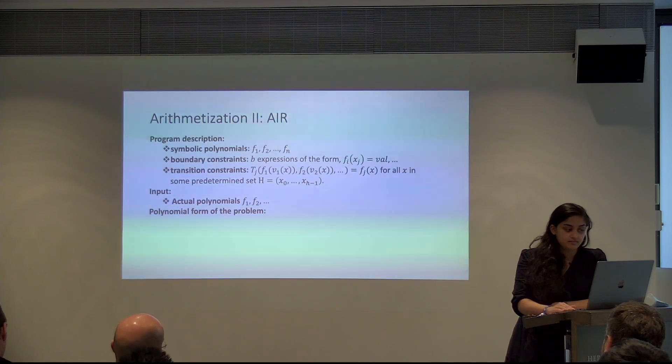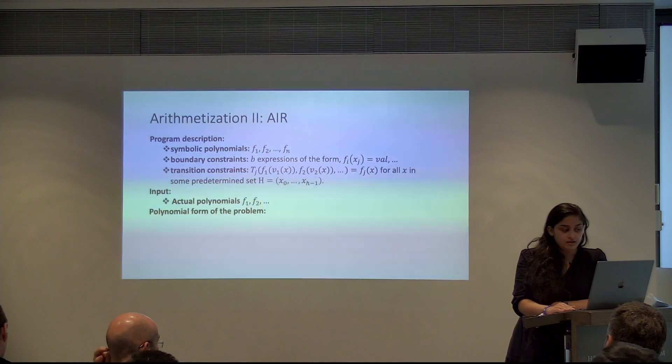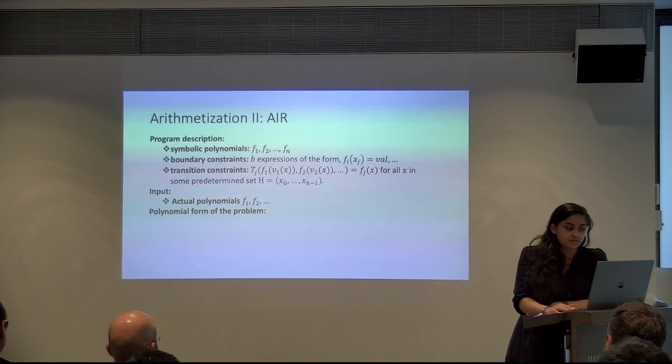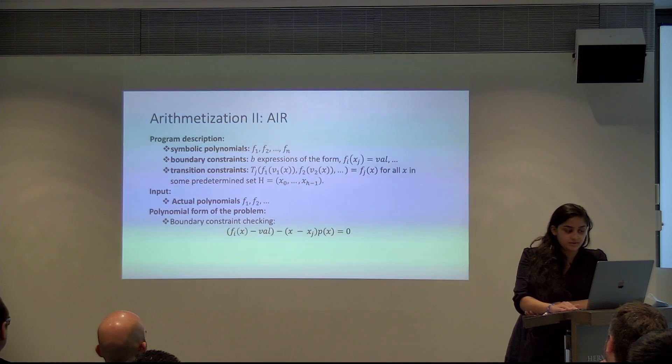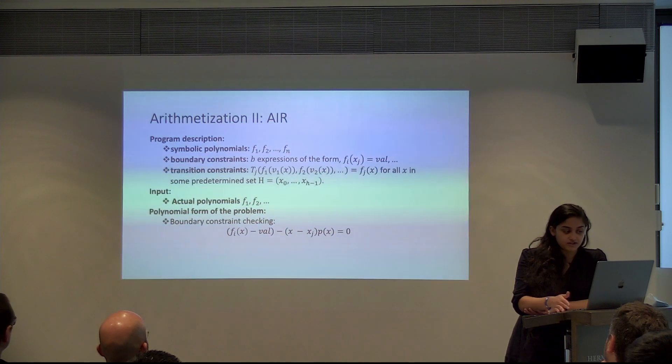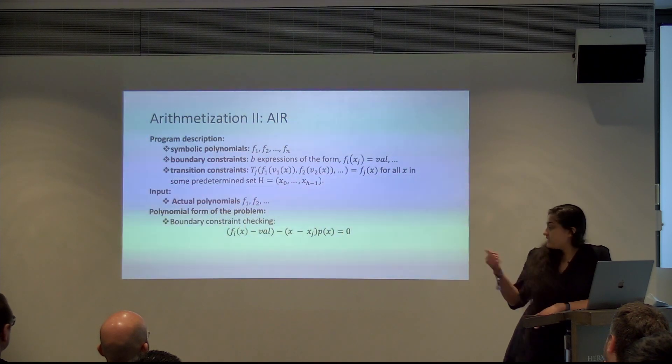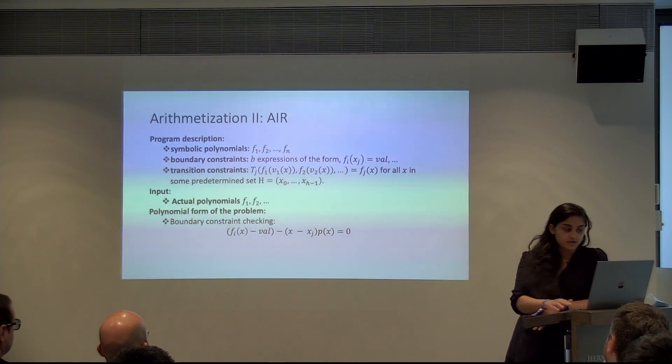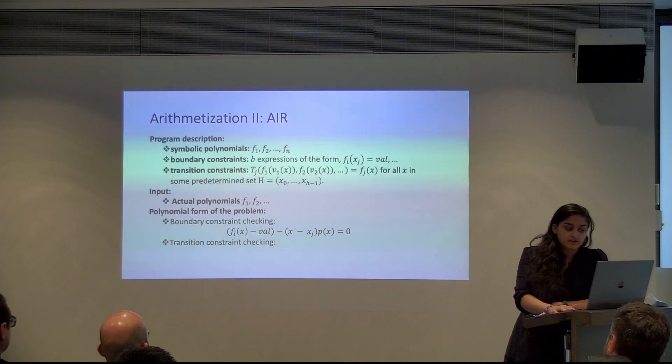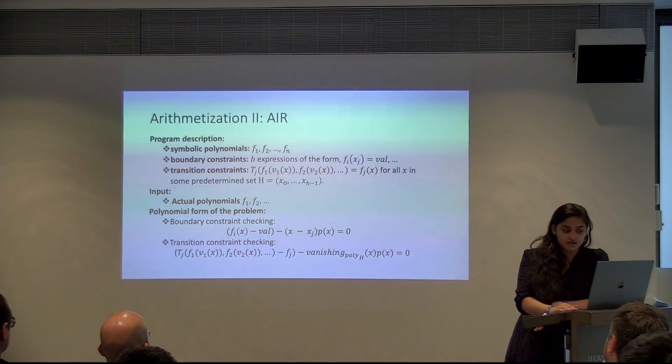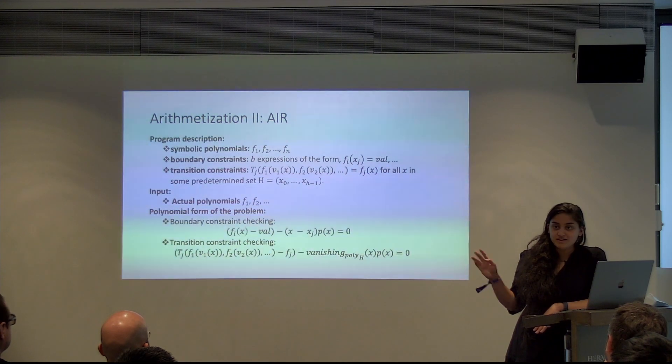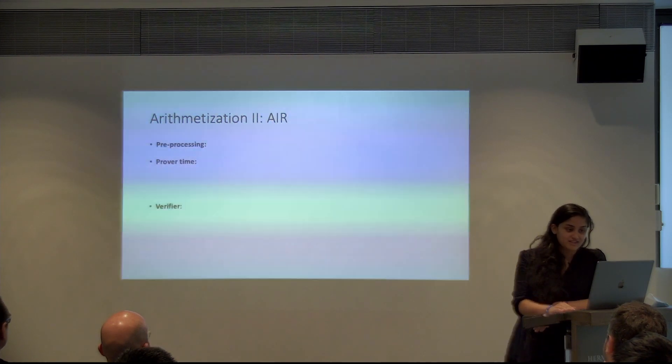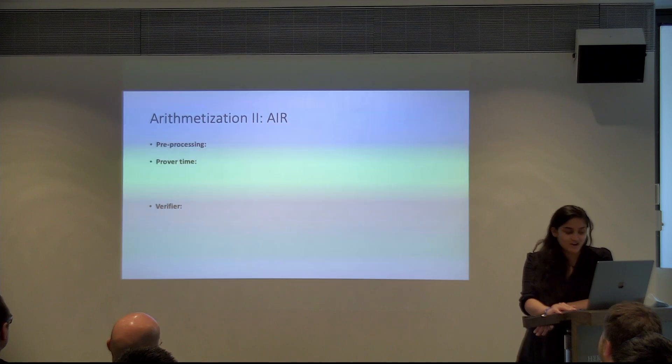Again, this is a lot of detail, feel free not to absorb it. And when the prover actually writes the inputs, they actually compute these polynomials. And the polynomial form of this problem is, there's boundary constraint checking, which is basically checking some expression of this form. And there's another set of expressions, which is transition constraint checking, which is expression of this form. Again, I'm sure I'm losing a lot of people. You can come back now, cause I'm telling you what the costs actually are.